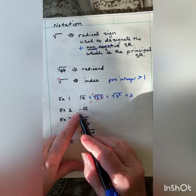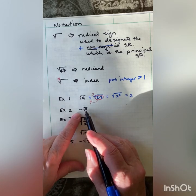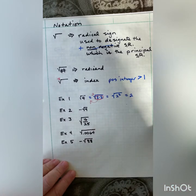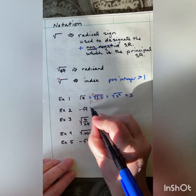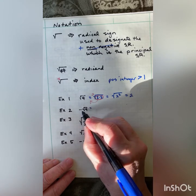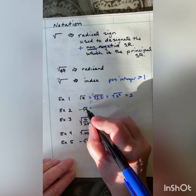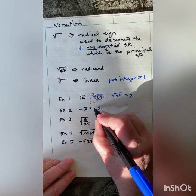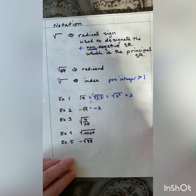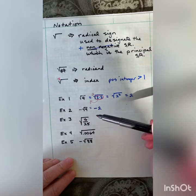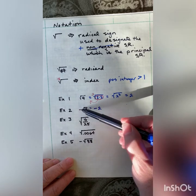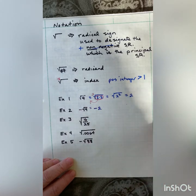It's okay to have the negative out here, it just cannot be underneath the radical. So this would give me the opposite of the square root of 4. The square root of 4 is 2, and the opposite would be negative 2. So if they wanted you to come up with the negative part of the square root, you just put it up front.